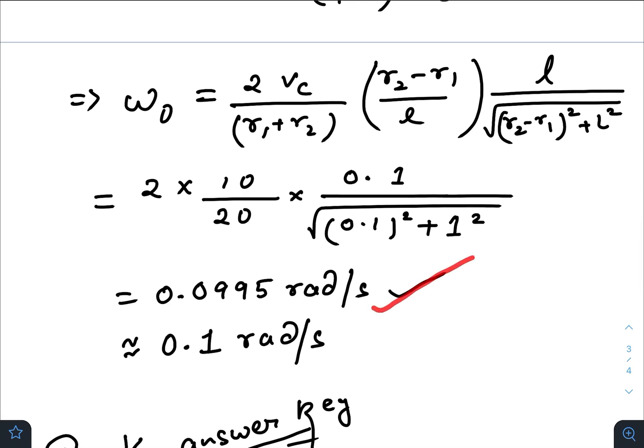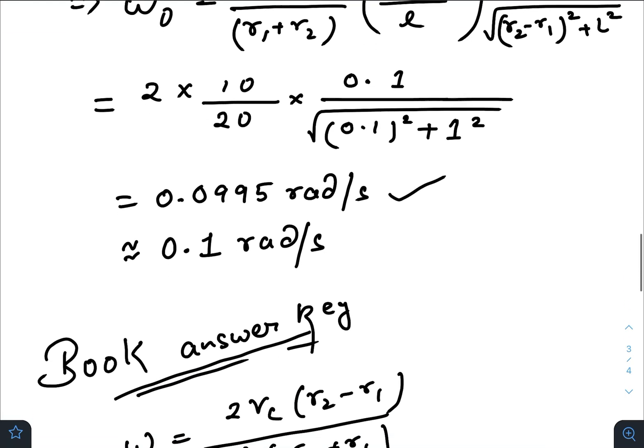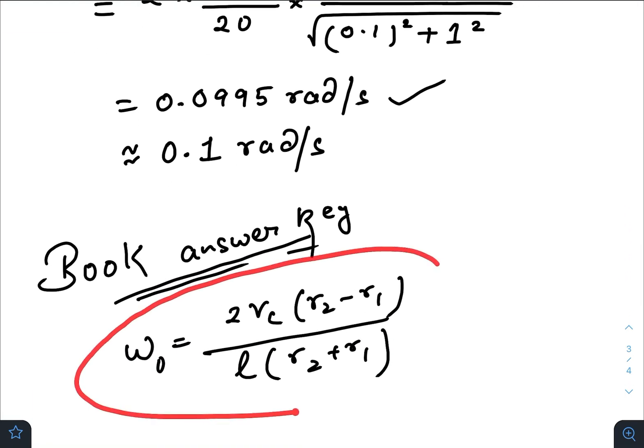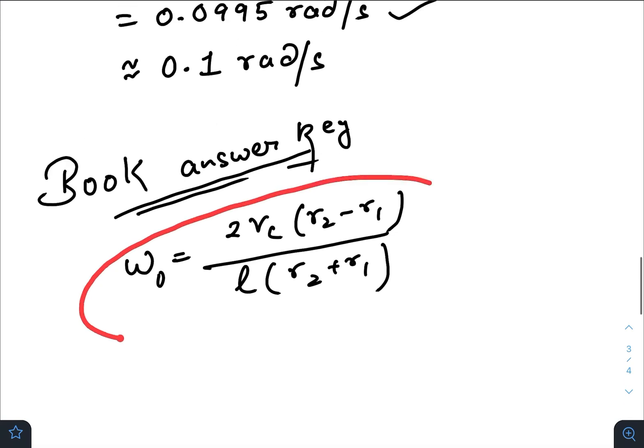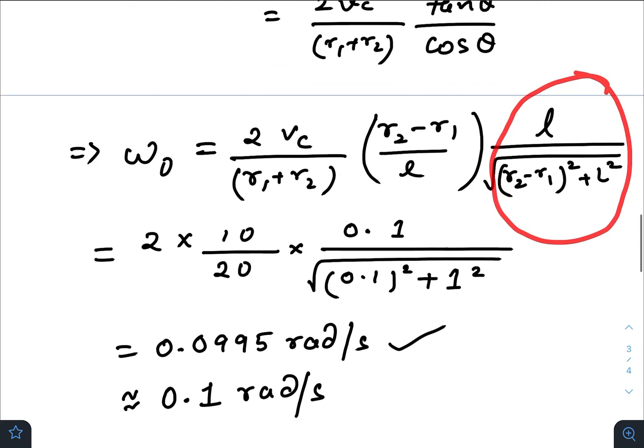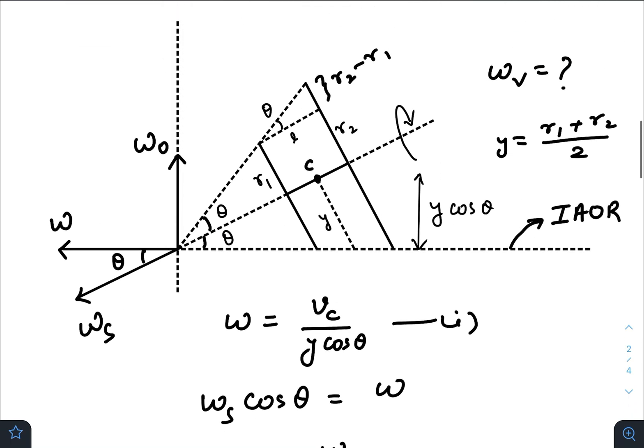Now if you just round it up to its nearest value or closer value, it should be 0.1 radians per second, which matches the answer given in the book. But this expression that has been given in the book answer key is this one—they have totally ignored this component. I mean, I don't think this answer is correct, and I think the answer that I have provided is correct.